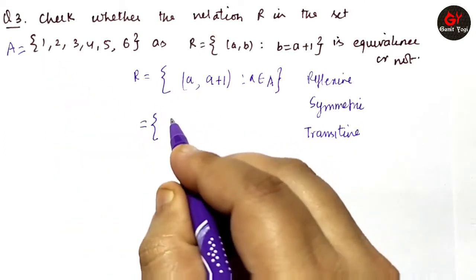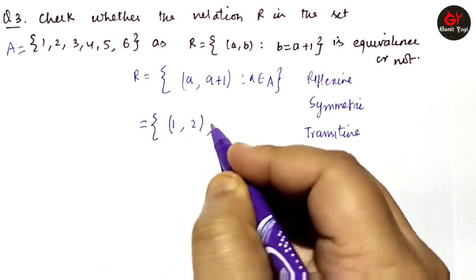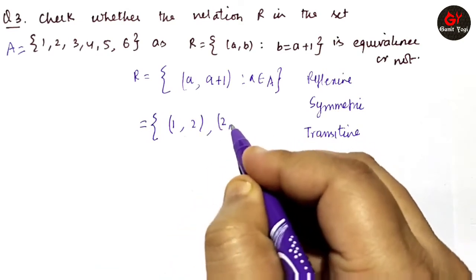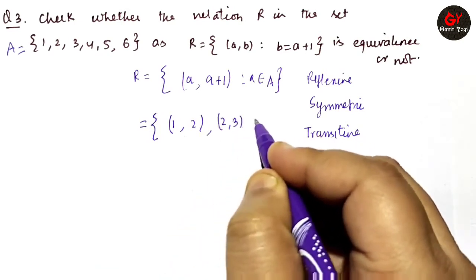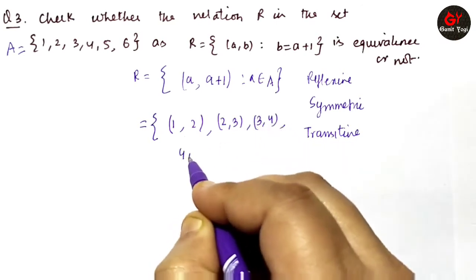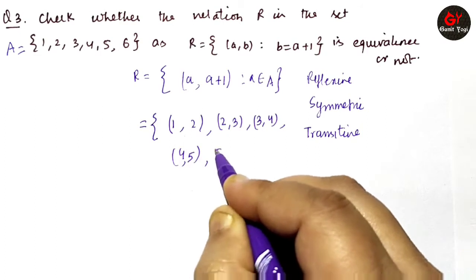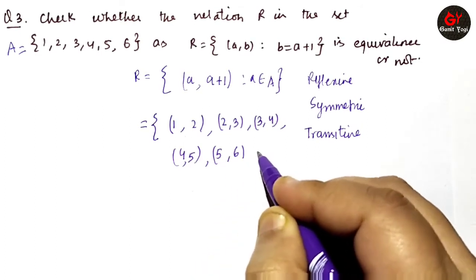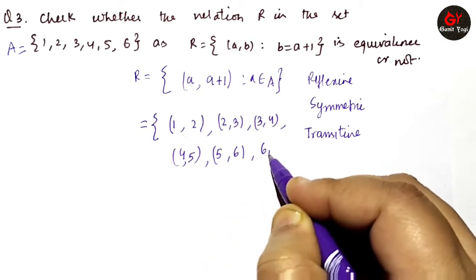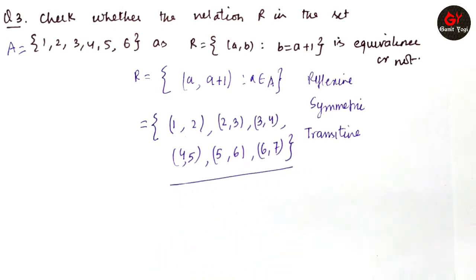Now let us list the elements of R. If a = 1, we get (1,2); a = 2 gives (2,3); a = 3 gives (3,4); a = 4 gives (4,5); a = 5 gives (5,6); and a = 6 gives (6,7). So our relation R is formed. Now one by one we will check whether it is reflexive, symmetric, or transitive.